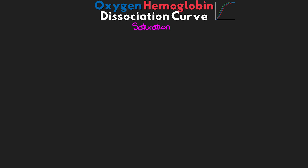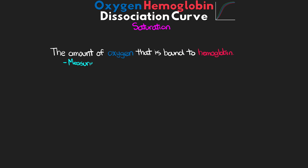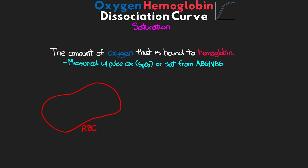Before we get into talking about the curve itself, we have to talk about a couple things first. The first is saturation. When we're talking about saturation, what we're really talking about is the amount of oxygen that is bound to hemoglobin in the blood. Most commonly, we use a pulse ox and get an SpO2, or we can also use the saturation from an arterial or venous blood gas. Our red blood cells lack much of the normal machinery of other cells, including the nucleus, and their main purpose is really to transport oxygen.